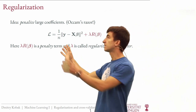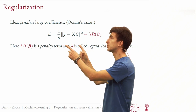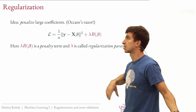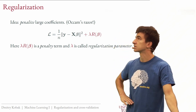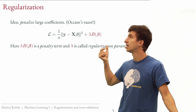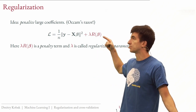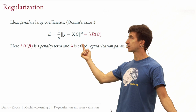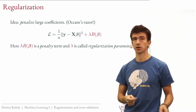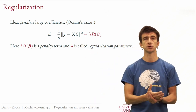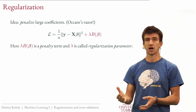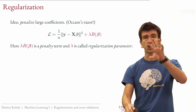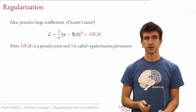We take the loss function of linear regression from previous weeks and add a penalty term R(beta). The larger the coefficients of beta, the larger this term will be. Lambda is a regularization parameter: set it to zero and you're not regularizing at all; set it very large and you're regularizing very strongly. Lambda is the tuning knob, whereas R(beta) is the particular penalty function you choose upfront.